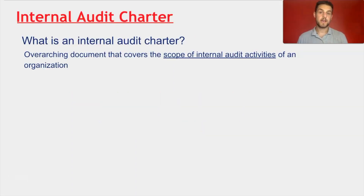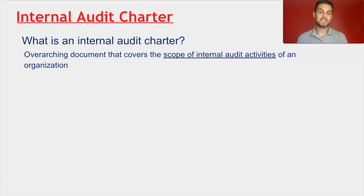To put it simply, an internal audit charter is an overarching document that covers the scope of internal audit activities of an organization. While studying for the CISA exam or looking at different internal audit charters, some may be more specific. For example, CISA talks about the IS internal audit charter, which basically means an internal audit charter that mainly covers information systems of an organization.